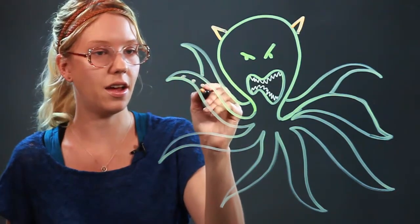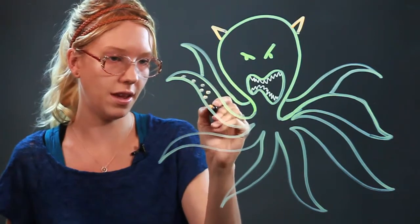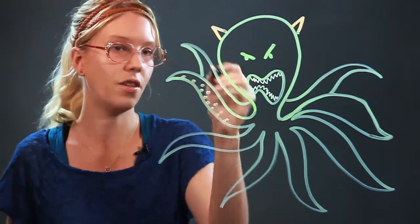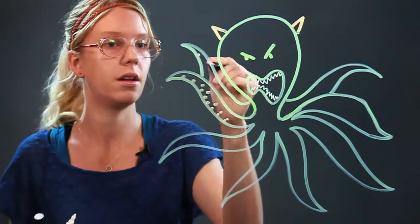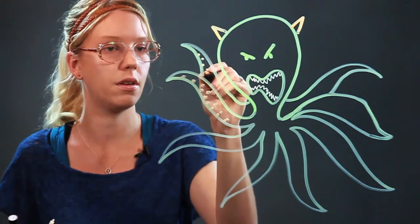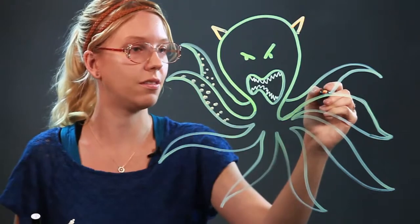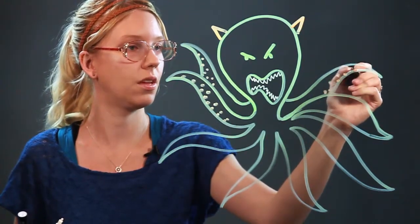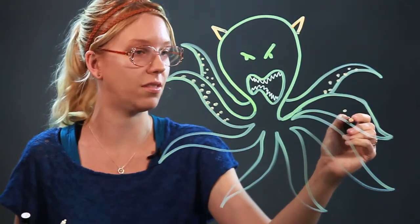And then like all octopus, you can give him his little suckers by drawing little dots on the tentacles that you'll see this part, like this side of. And that would just make him look like a real octopus and really scary because it looks like he's coming to get you.